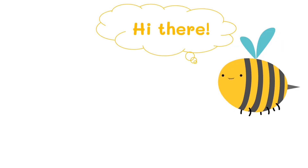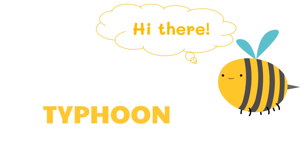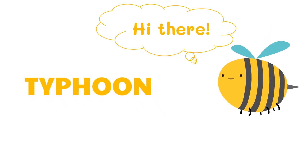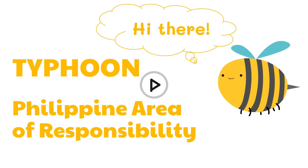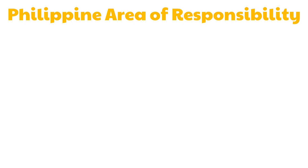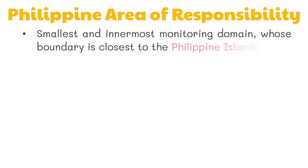In our previous video we talked about typhoons, how they develop and how they are affected by land masses and bodies of water. In this video we are going to talk about the Philippine Area of Responsibility, or PAR for short, and how to track typhoons using a map and track data. The Philippine Area of Responsibility is the smallest and innermost monitoring domain whose boundary is closest to the Philippine islands.